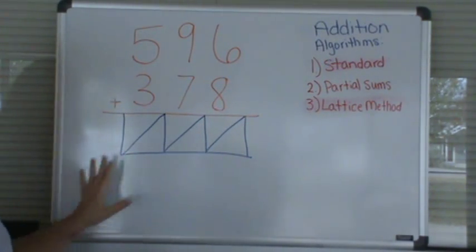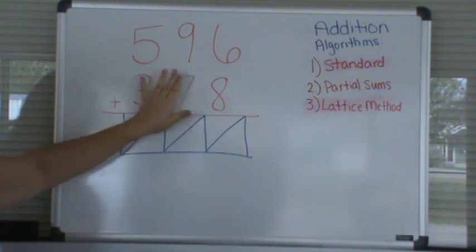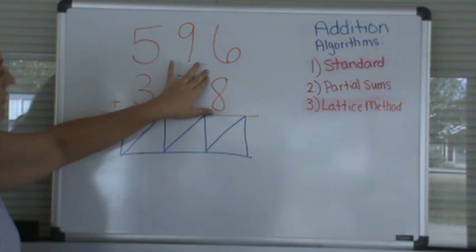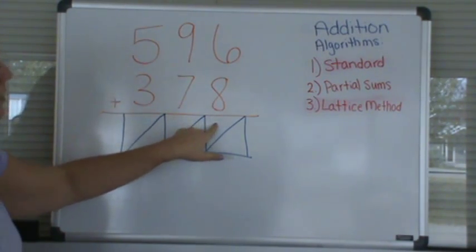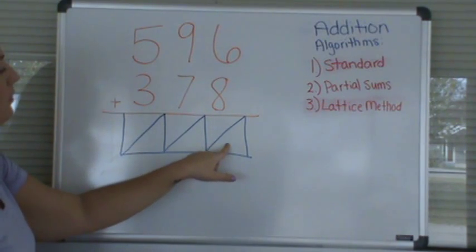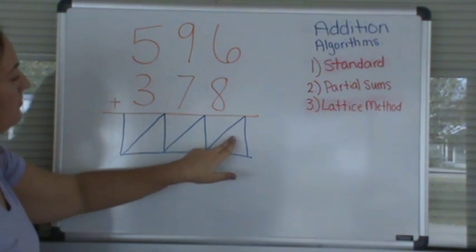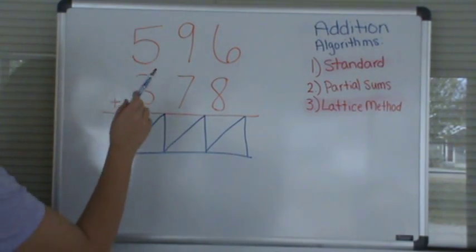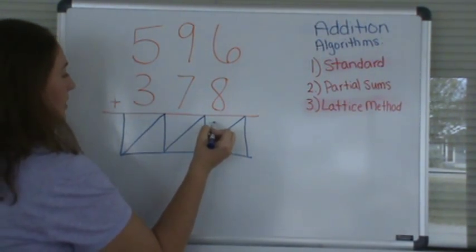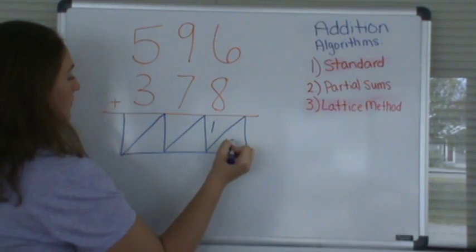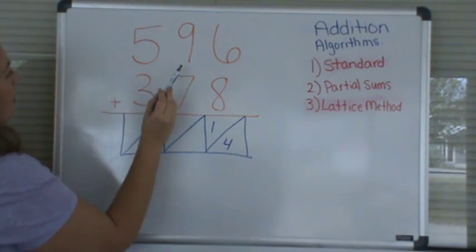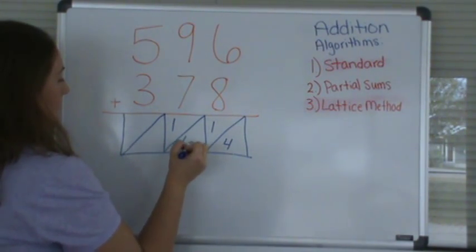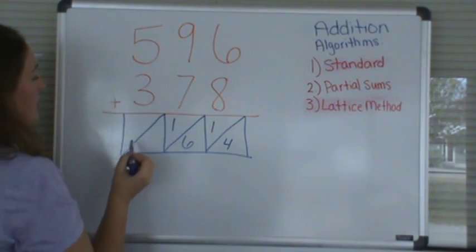And then we will start from the right-hand side and work our way to the left. In the lattice method, instead of carrying our 1, we'll record our 1 in the top and we'll record our ones place in the bottom. So, 6 plus 8 is 14, so we record our 1 here and we record our 4. And then 9 plus 7 is 16. And 5 plus 3 is 8.